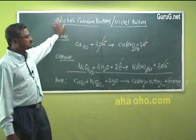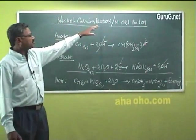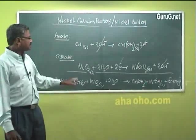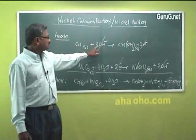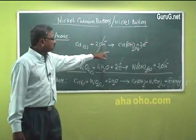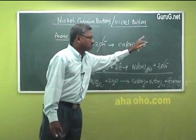The chemical reactions taking place in a nickel cadmium battery can be explained like this. At anode, cadmium reacts with hydroxide OH- to give cadmium hydroxide and two electrons.